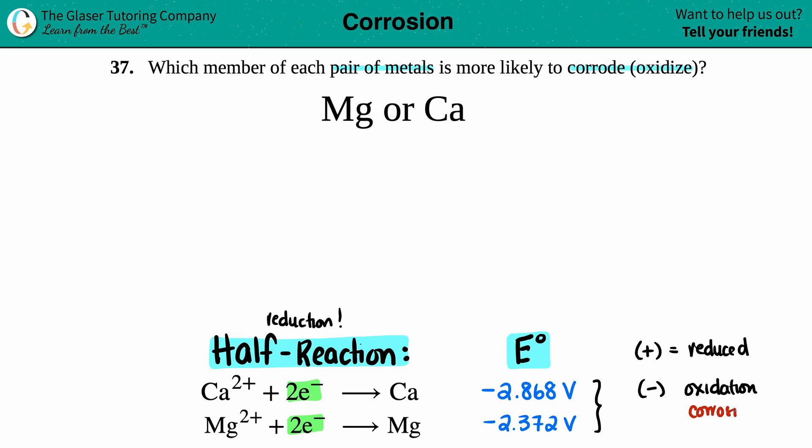So all we have to do is just look at these values. Which one is the more negative value? Negative 2.868 volts is lower than negative 2.372.